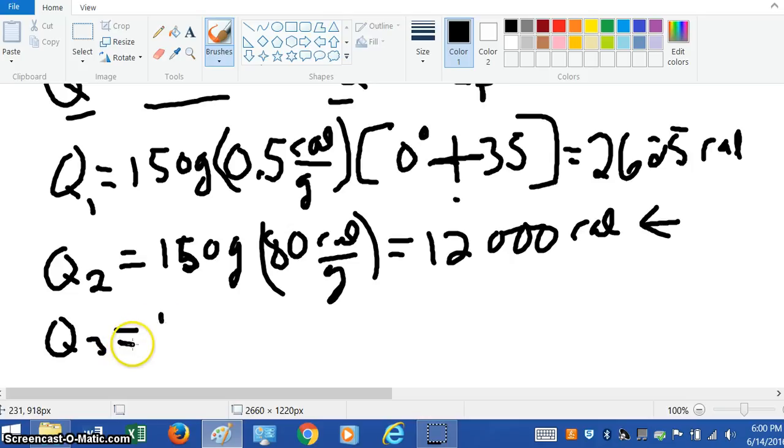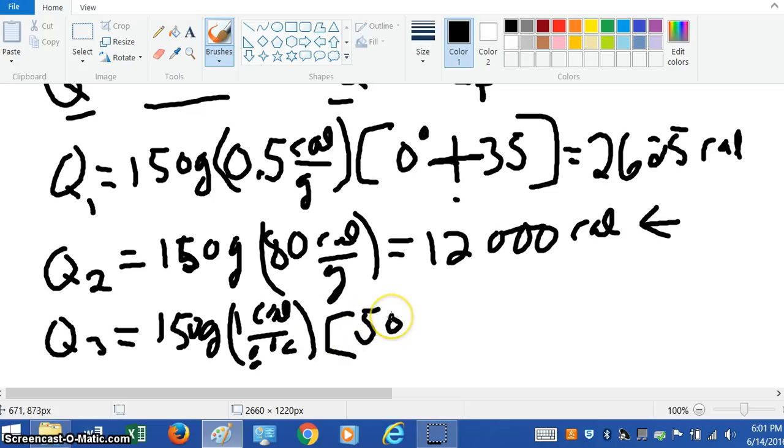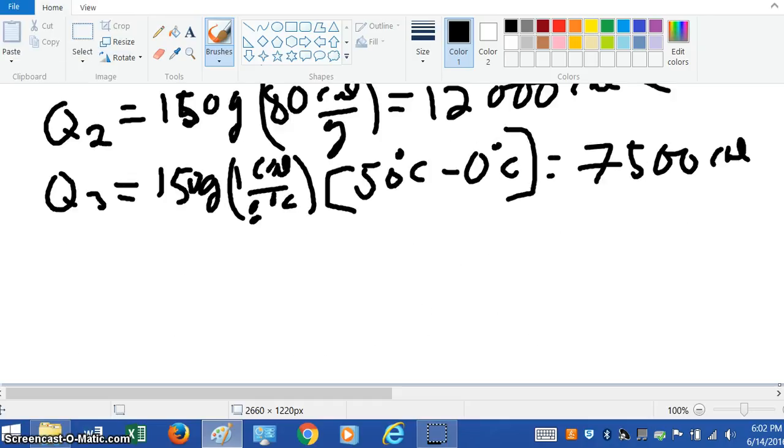Now what we're going to do is we're going to take the 150 grams and we're going to use the specific heat equation. This is going to be times one, because now it's liquid water. This is the specific heat, one calorie per gram degree Celsius. And now we have our final temperature, which is 50 degrees Celsius minus zero degrees Celsius. That's just 150 times 50 for this step. And then at the very end, we're going to add them all together.